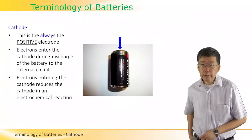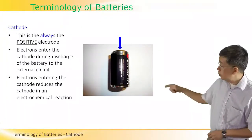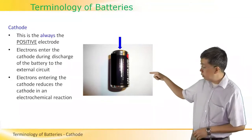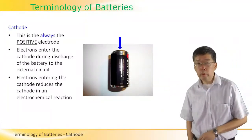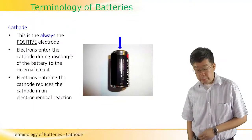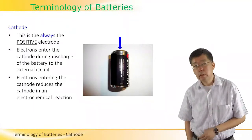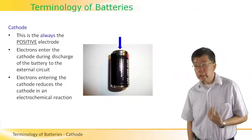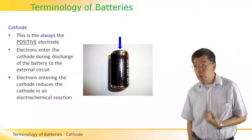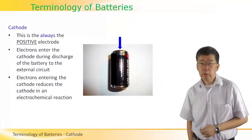The cathode is the complementary electrode in any battery, indicated by the blue arrow in the photograph on the right side. By definition, it is always the positive electrode of the battery.